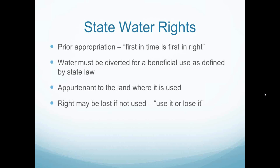Water rights under state law are tied to the land where they are used and can generally be moved only with the permission of a state permitting authority. State rights are lost if not used, either through abandonment or statutory relinquishment for a period of years — usually five. In contrast, Indian water rights are based on federal law and have two basic strands.